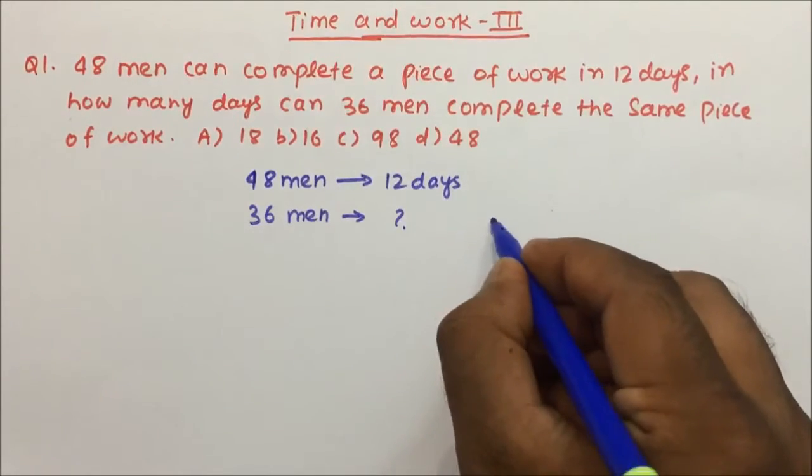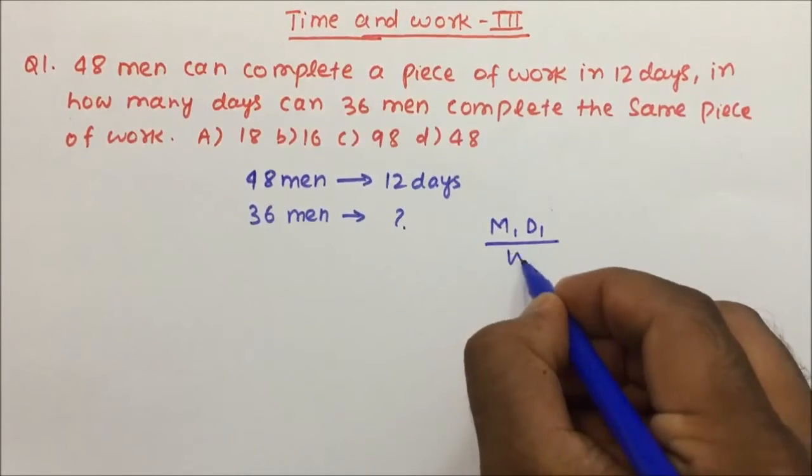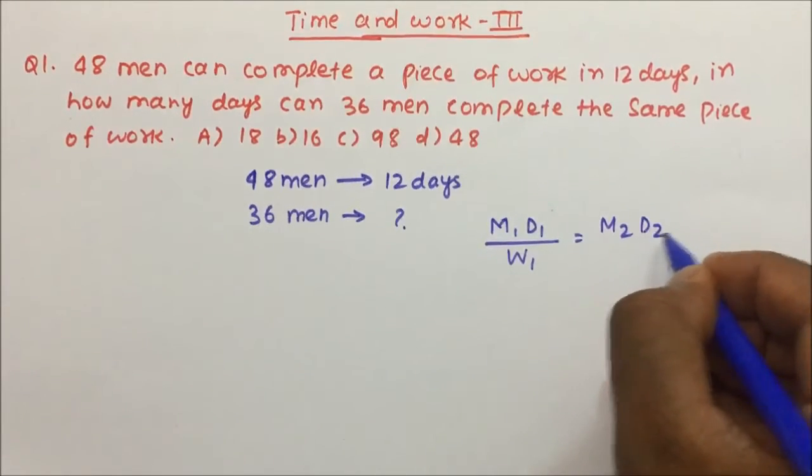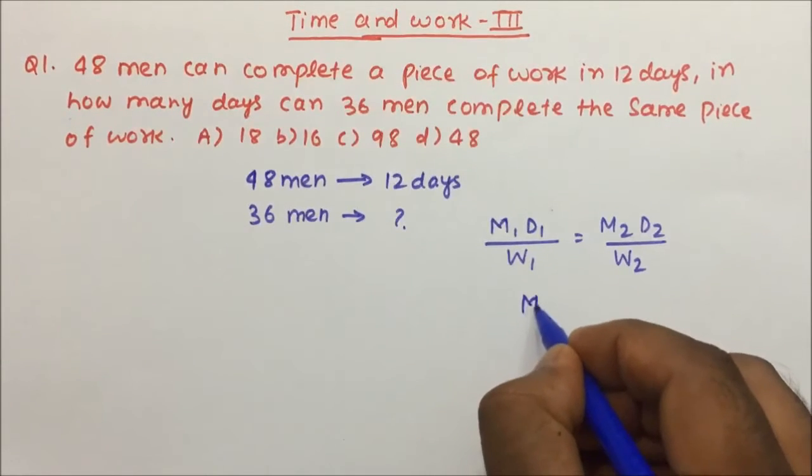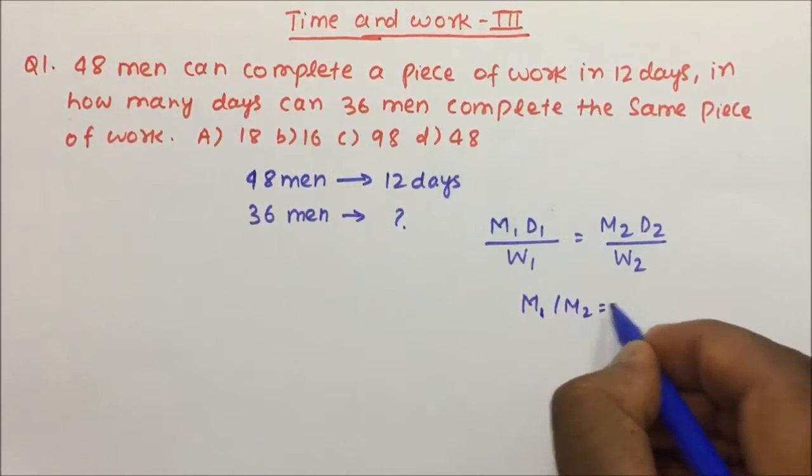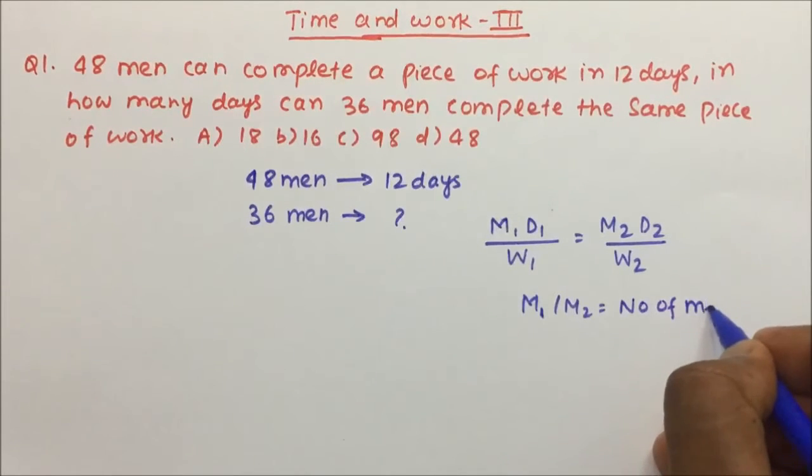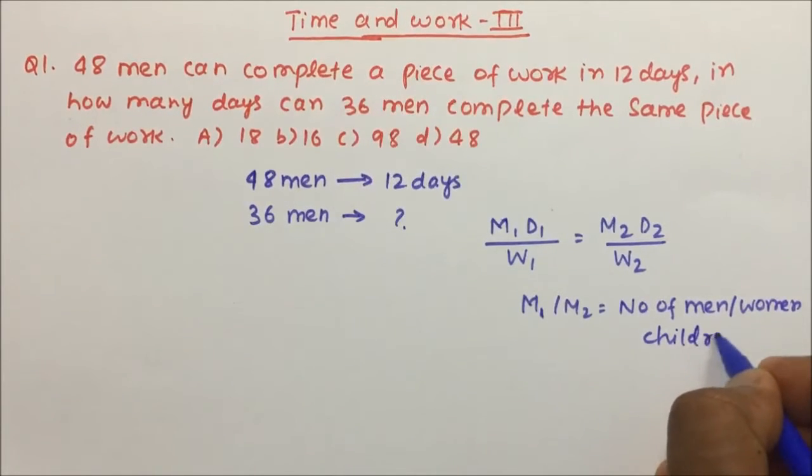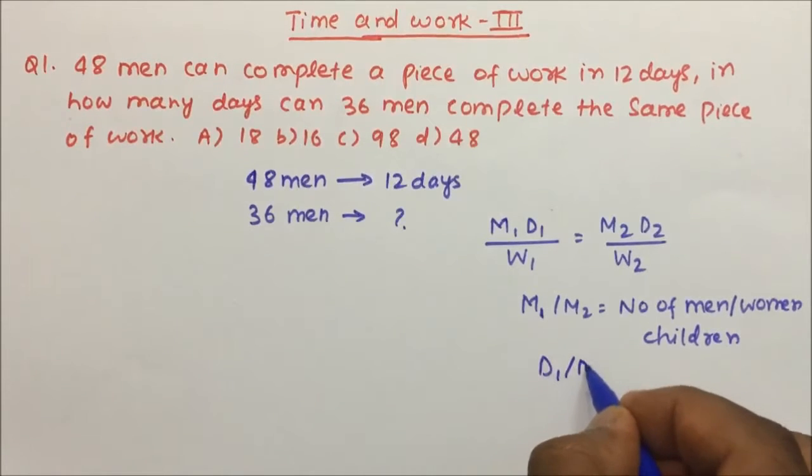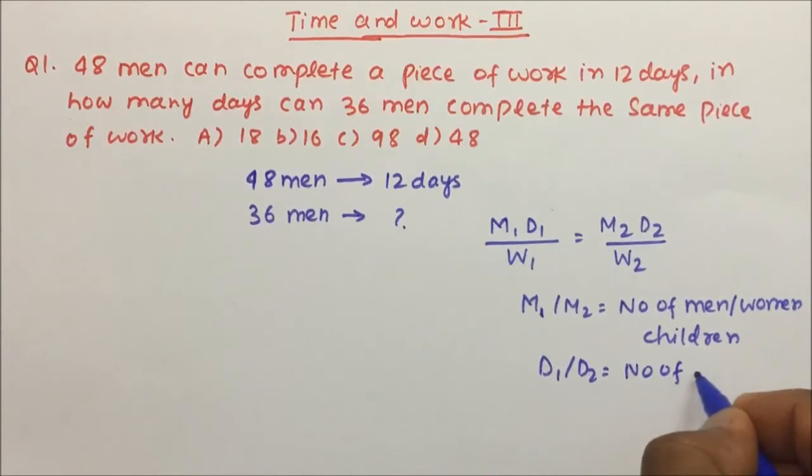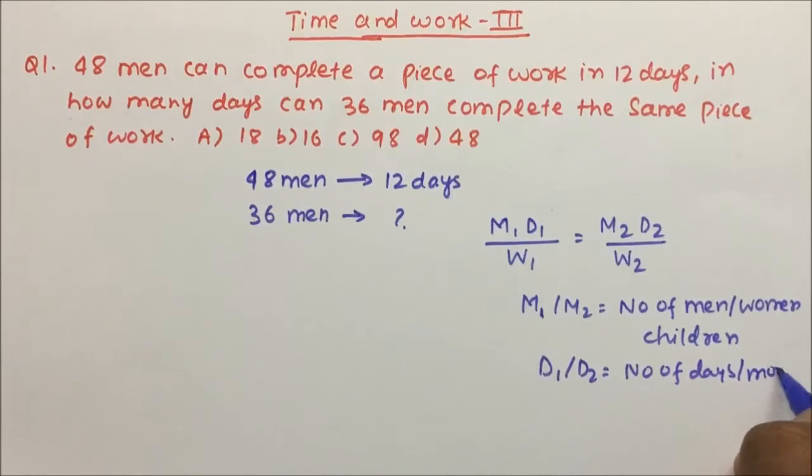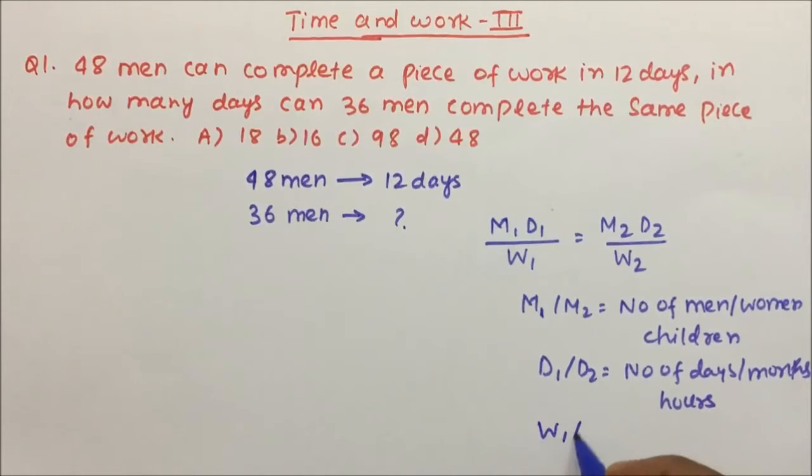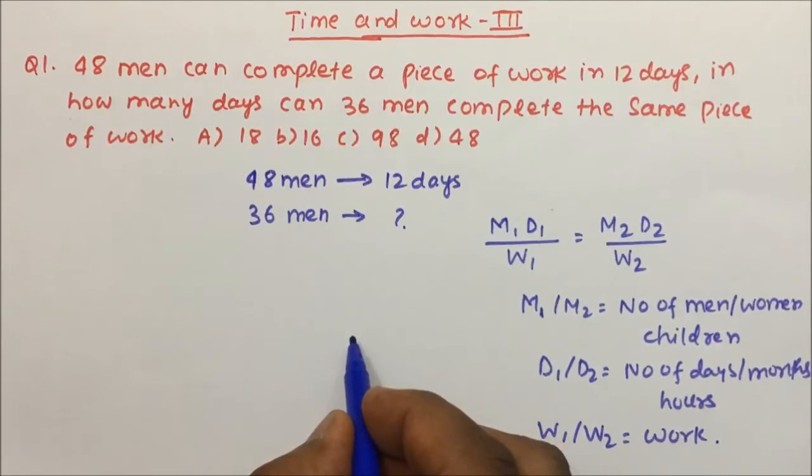So here we are going to use one formula: M1*D1/W1 equals M2*D2/W2, where M1 and M2 is the number of men or women or children, D1 and D2 is number of days, months or hours, and W1 and W2 is work. We will be using this same formula to solve this kind of question.